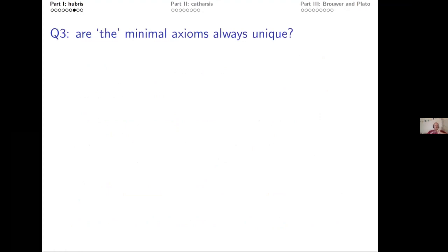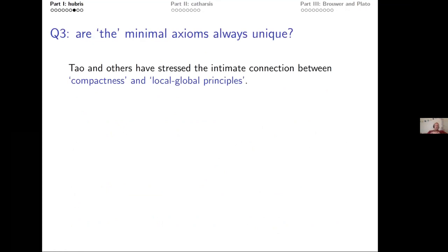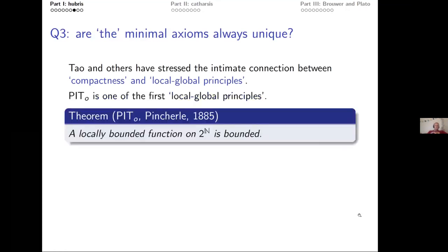Question three: are the minimal axioms always unique? Terence Tao and Gowers have stressed the intimate connection between compactness and local-global principles. Pincherle already considered the following local-global principle over 100 years ago: a locally bounded function on Cantor space is bounded — locally bounded meaning there's a ball around any point in which the function is bounded above. This is a trivial application of compactness.